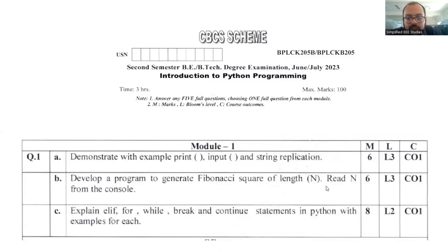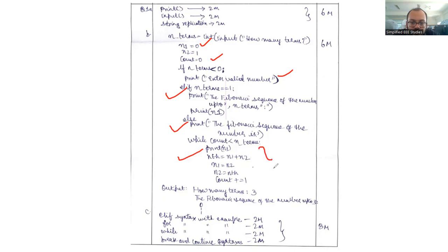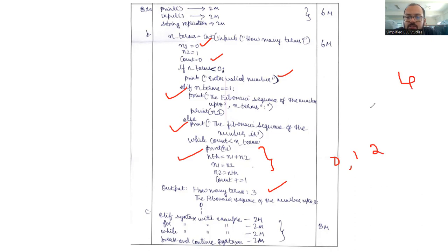The second question: develop a program to generate the Fibonacci series of length N, reading N from the console. Weightage is six marks. For this program, follow initialization of variables, use display statements, if statements, and a loop with the correct logic. For example, Fibonacci series of three gives: 0, 1, 1. For four: 0, 1, 1, 2 — because 0+1=1, 1+1=2, and so on. You are supposed to explain this Fibonacci series logic.